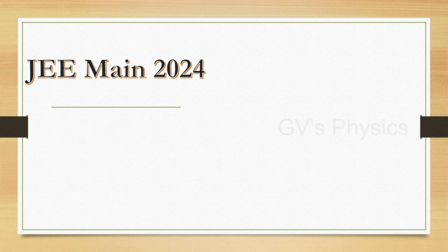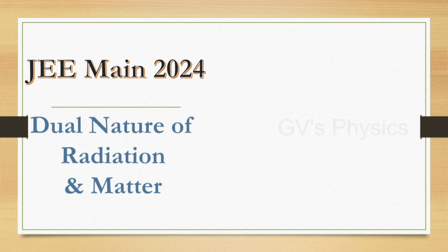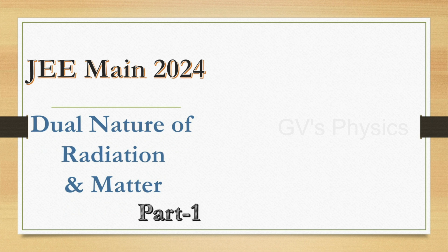Hello students, today we are going to see JEE Main questions on the most important chapter — dual nature of radiation and matter. In this chapter we have only a limited number of formulas, so it's very easy to study and solve the problems.